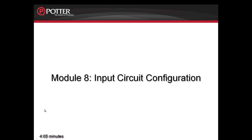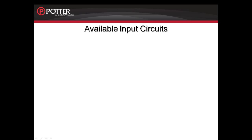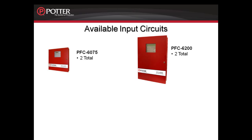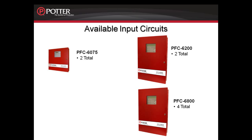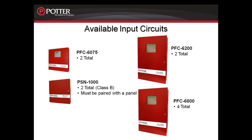This is Module 8, Input Circuit Configuration. Each panel has a different quantity of programmable input circuits. The PFC 6075 has 2 total programmable input circuits. The 6200 also has 2 programmable input circuits. The PFC 6800 has a total of 4 programmable input circuits, and in addition, you can install up to 31 PSN-1000s that each has 2 programmable input circuits.